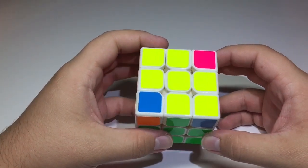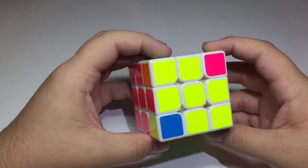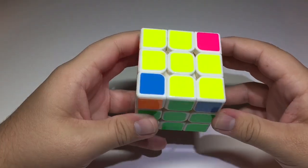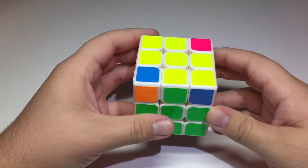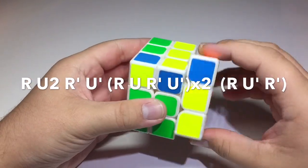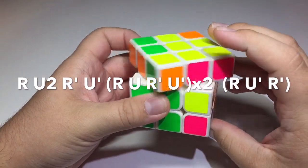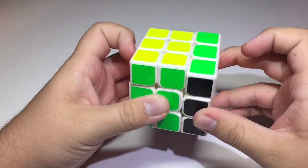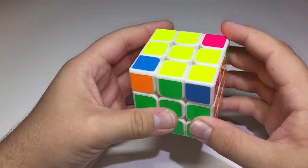So the next case is this one. Get the two yellow stickers right here. You hold it right here, and you do this. And if I do it fast, it looks like this.